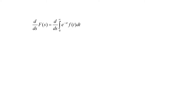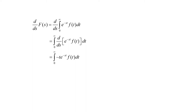Integration and differentiation — the order in which those operations are conducted doesn't matter. We can flip those, so this will be the integral from zero to infinity of the first derivative with respect to s of e to the negative st times f(t) dt. If we take that derivative with respect to s, we'll get the integral from zero to infinity of negative t times e to the negative st times f(t) dt.